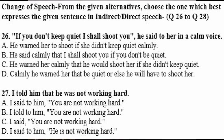Question 26 — direct speech: 'If you don't keep quiet, I shall shoot you' — said in a calm voice. Convert to indirect speech. Options: A) he warned her to shoot if she didn't keep quiet, B) calmly he said that I shall shoot you if you don't be quiet, C) he warned her calmly that he would shoot her if she didn't keep quiet, D) calmly he warned her to be quiet or else he will shoot her. Answer is C.